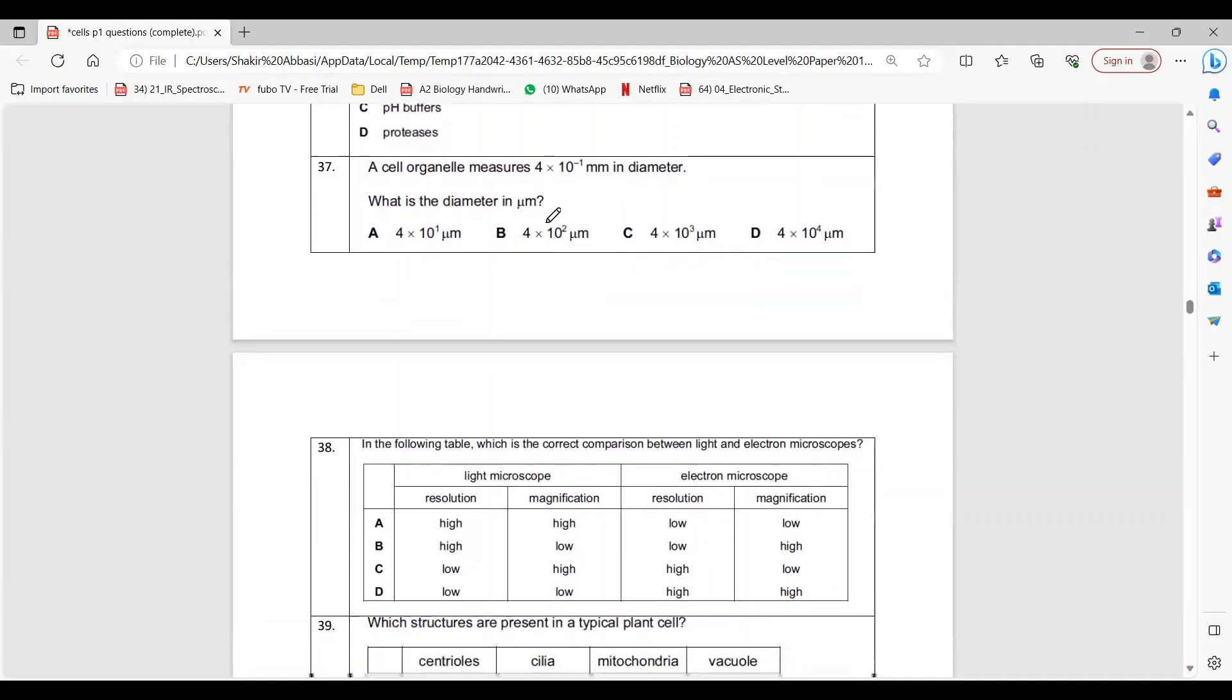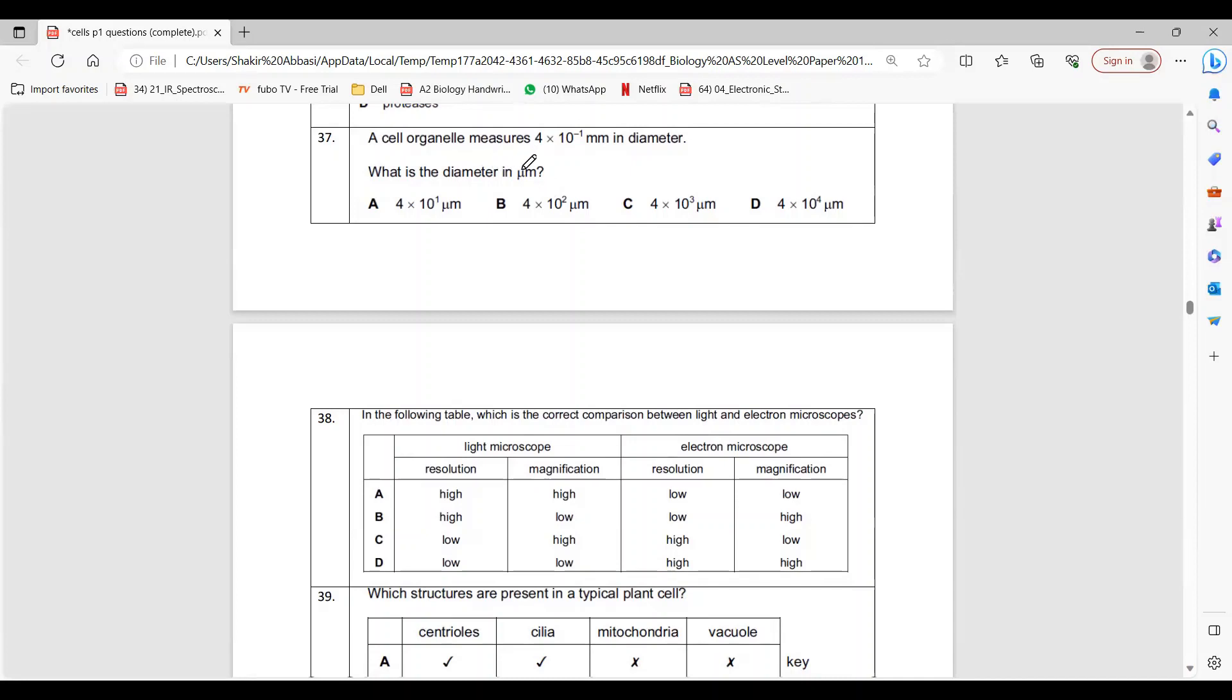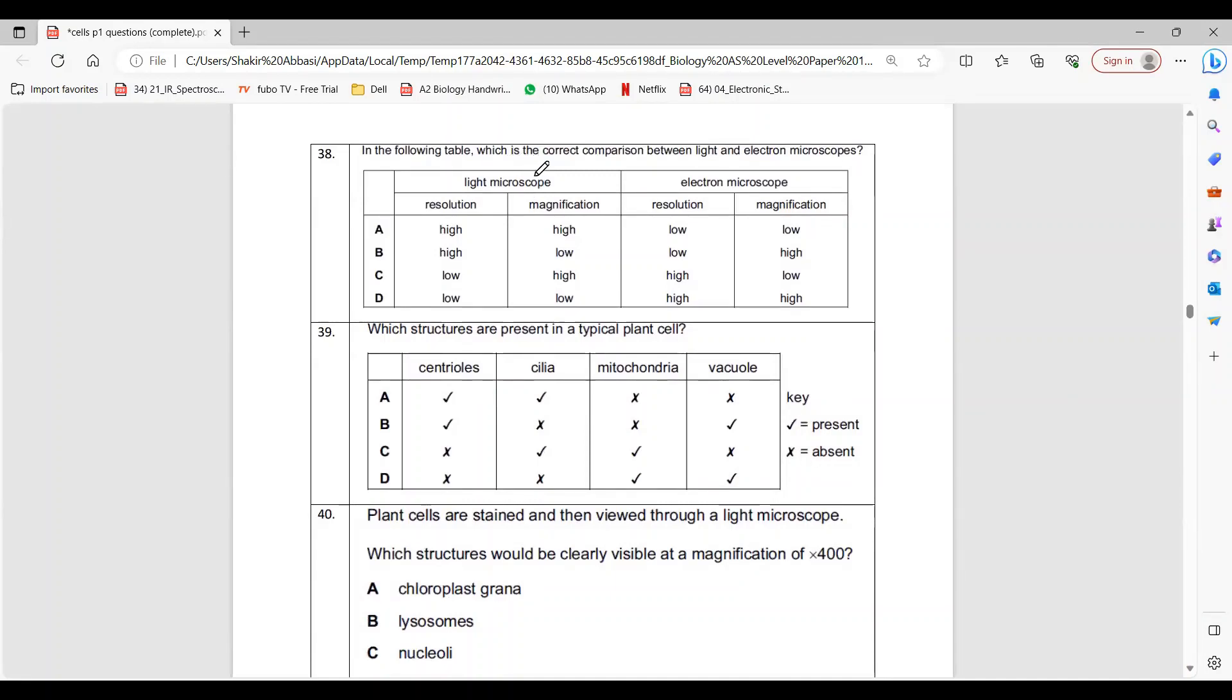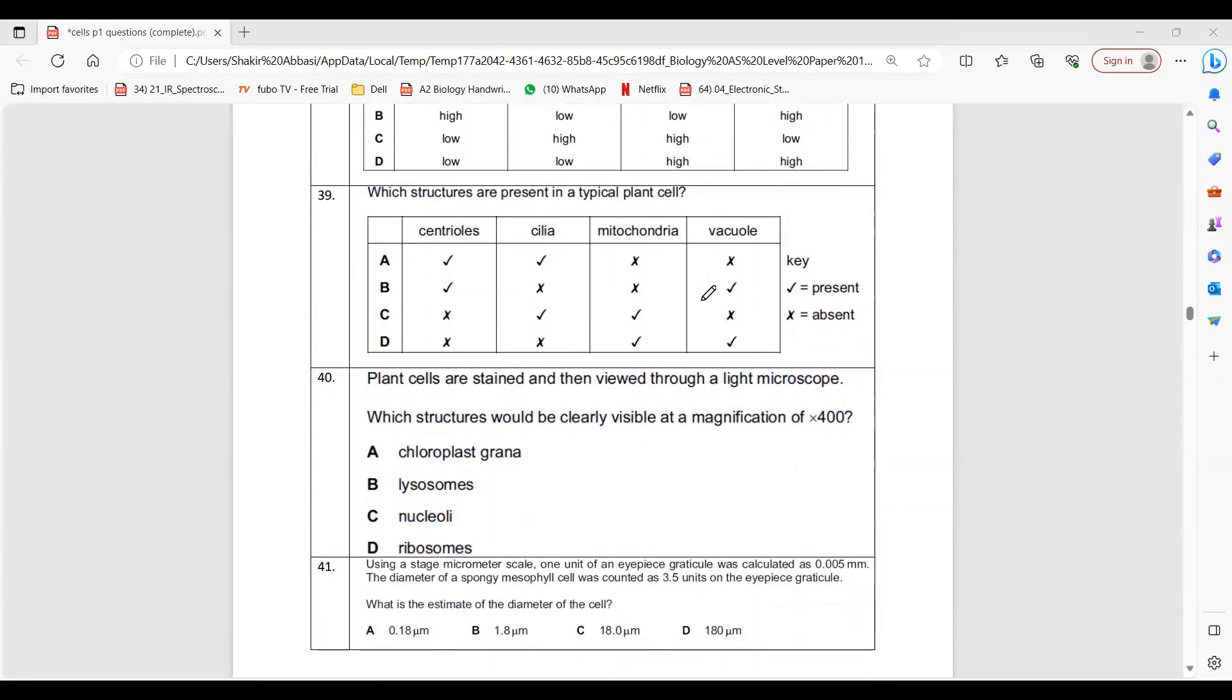Question 37: What is diameter in micrometers? This is in millimeters, so just multiply by thousand and you'll be getting beta, because milli to micro is multiplying by thousand. Question 38: Light microscope has low resolution because we know that resolution of light microscope is 200 nanometers, but electron microscope has 0.5 nanometers. You can see things as small as only 200 nanometers with light microscope, but with electron microscope you can see things even 0.5 nanometers small. It's very high resolution. Also, magnification of light microscope is 1500 times, and of electron microscope is 250,000. So obviously delta.